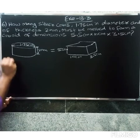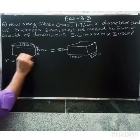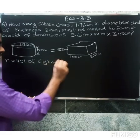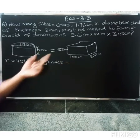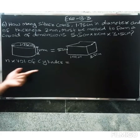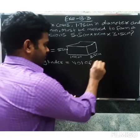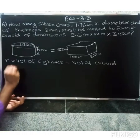So the volume of the cylinder - the silver coins are cylindrical - volume of n cylinders equal to volume of cuboid. So n into volume of cylinder equal to volume of cuboid.